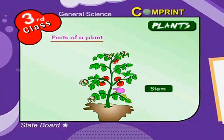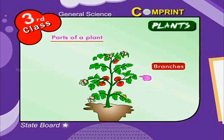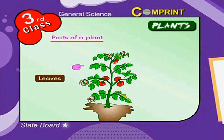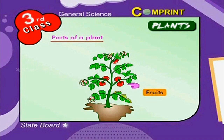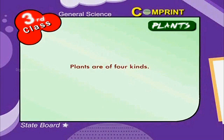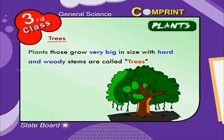stem, branches, leaves, flowers and fruits, both raw and ripe. Plants are of four kinds. Trees are plants that grow very big in size.